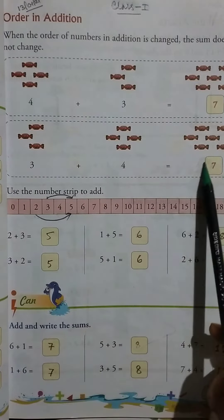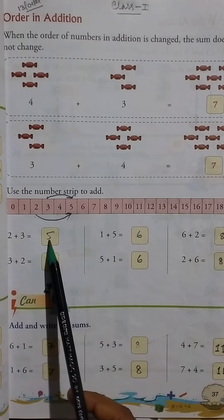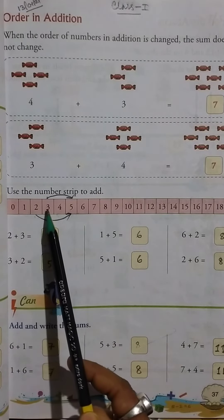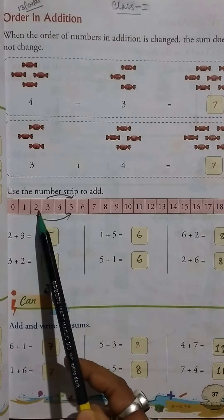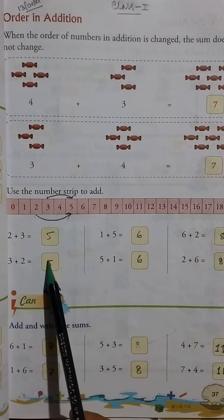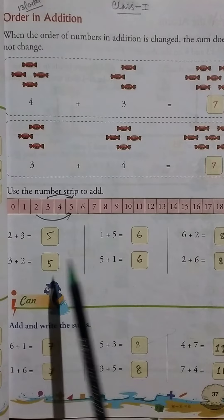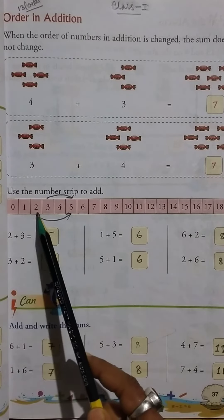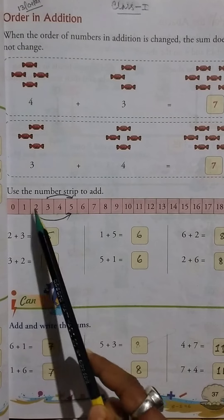...plus 3 equals 7. Then 3 plus 4 equals 7. Here, the order of numbers in addition is changed, but the sum does not change.